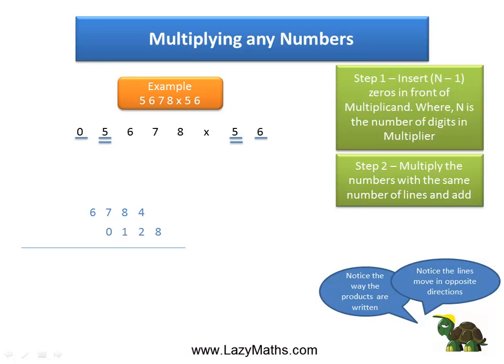The next step is 0 times 6 and 5 times 5. 0 times 6 is 0, and 5 times 5 is 25. 0 plus 25 is 25. We put 25 again in the carryover format.